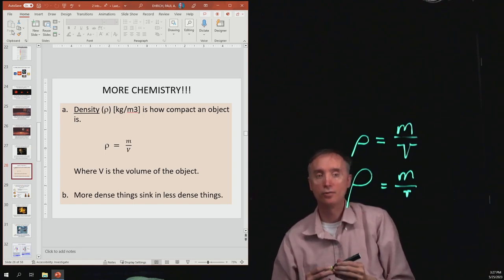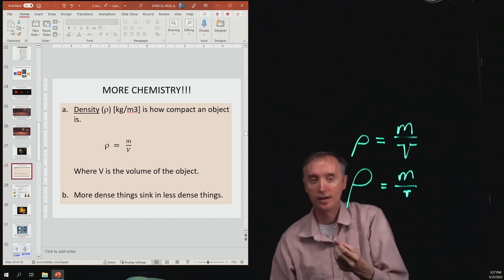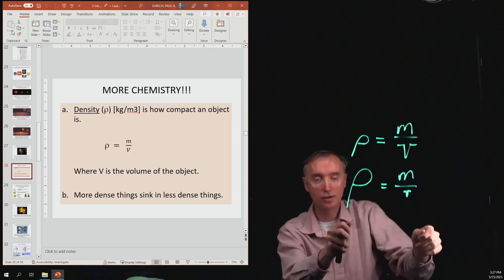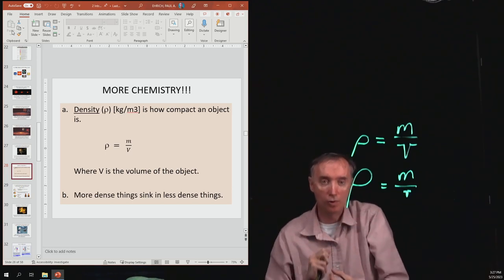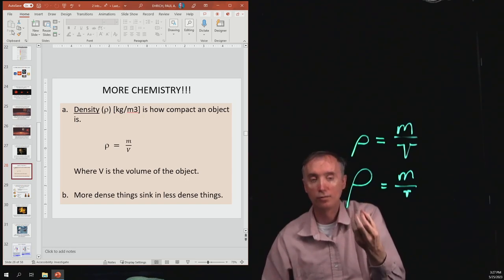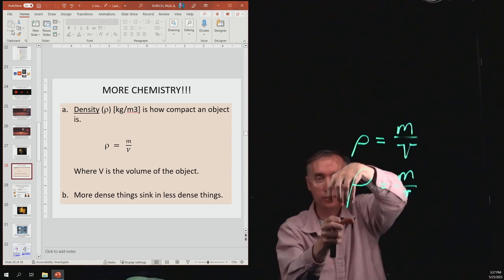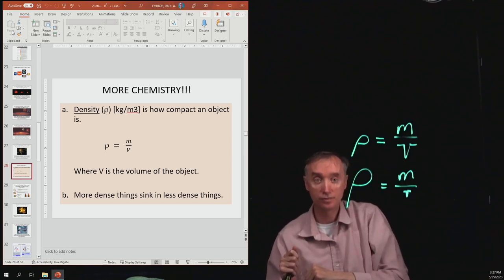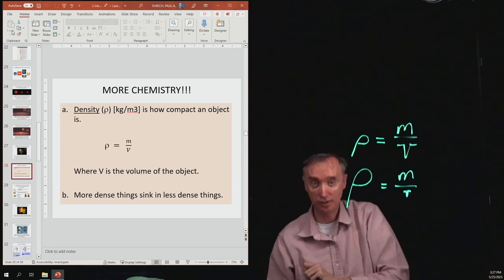Density not only depends on the mass of an object, but it also depends on its volume. Now, the main thing I want you to get out of this is more dense things sink into less dense things. If you've got a glass of water and you take a rock and you put it in there, where does the rock go? The rock goes to the bottom of the glass of water, because, in general, rock has a higher density than what water does. On the other hand, take an ice cube, put it into the water. What happens to the ice cube? It floats. The reason why the ice cube floats is its density is less than the density of water.